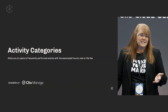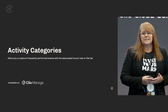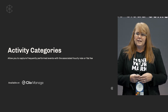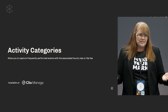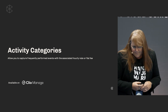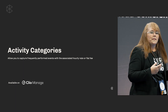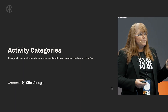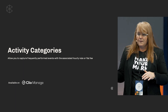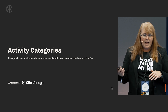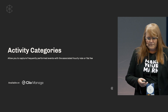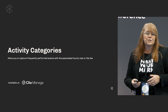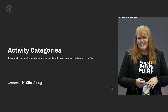So what are they? Activity categories. They're used when you're creating your time and your expense entries. They're used to capture frequently performed events with an associated rate — it could be hourly or flat fee. There are many benefits to them, some of which we'll talk about today.